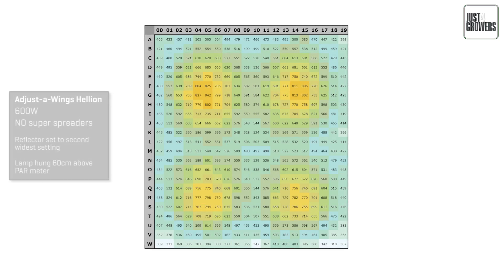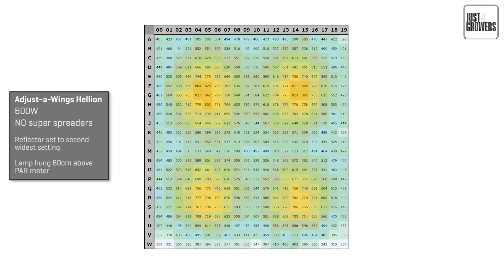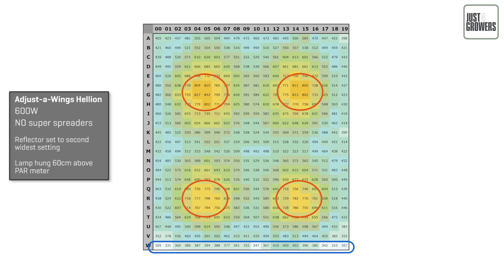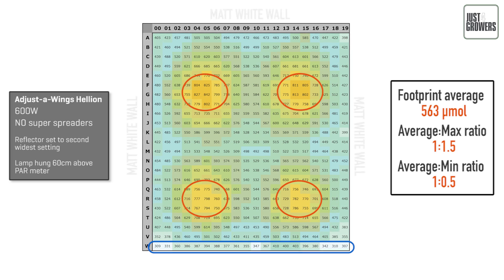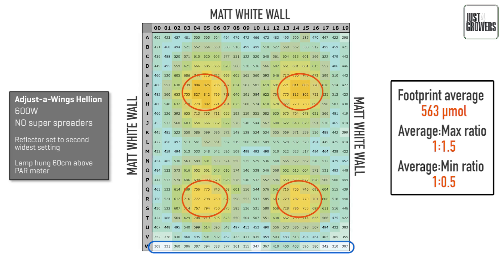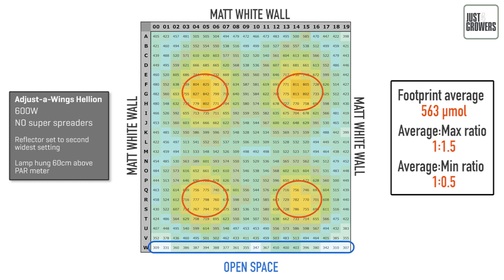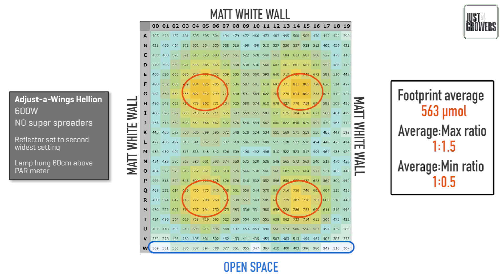Doesn't that look beautiful? I've got peaks of around 800 micromoles right underneath each lamp and lows of around 350 at the open side of my grow space. If you compare this to the opposite side, which benefits from the matte white wall's reflectivity, you can get an idea of how much light you lose to open spaces in your grow room. This is one main reason to fill the entire room with plants. The intensity overall, however, is incredible.